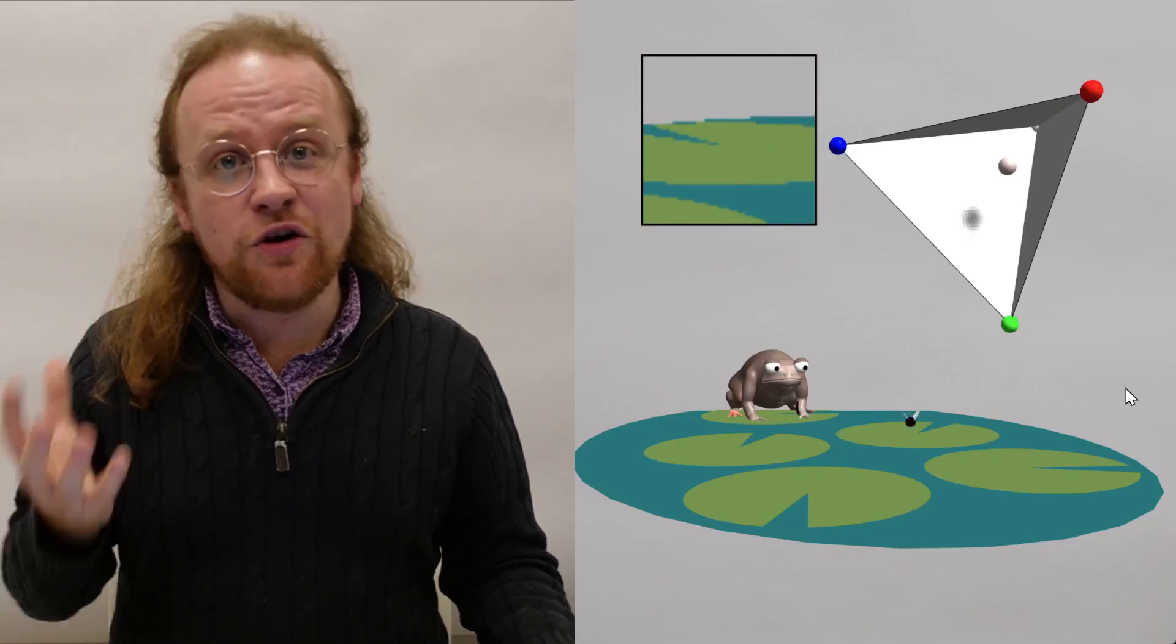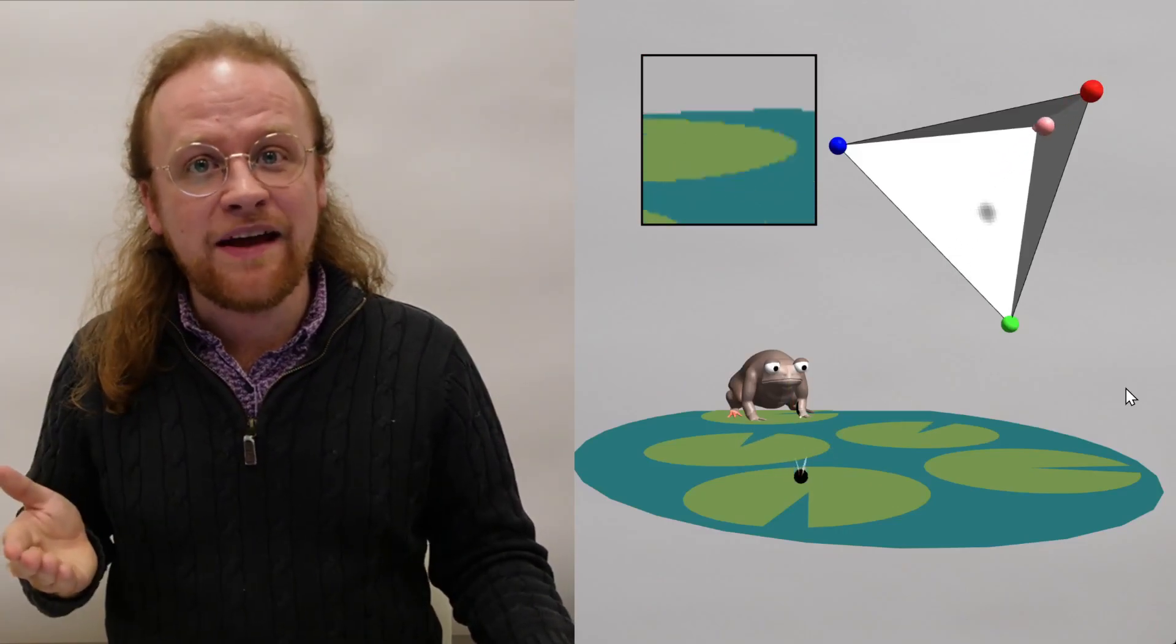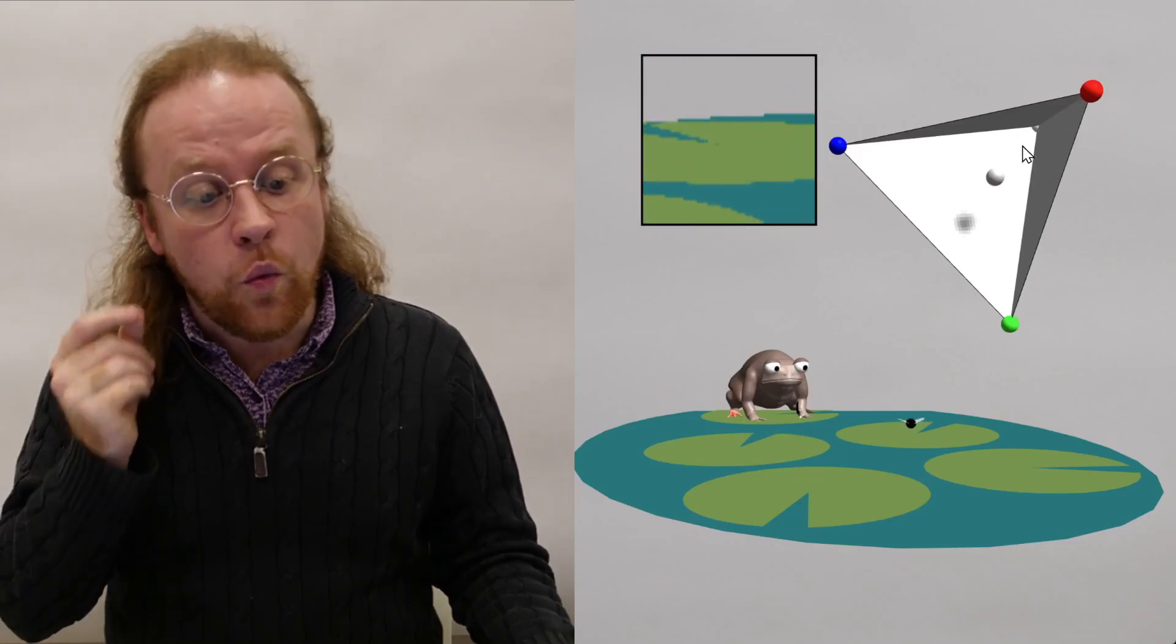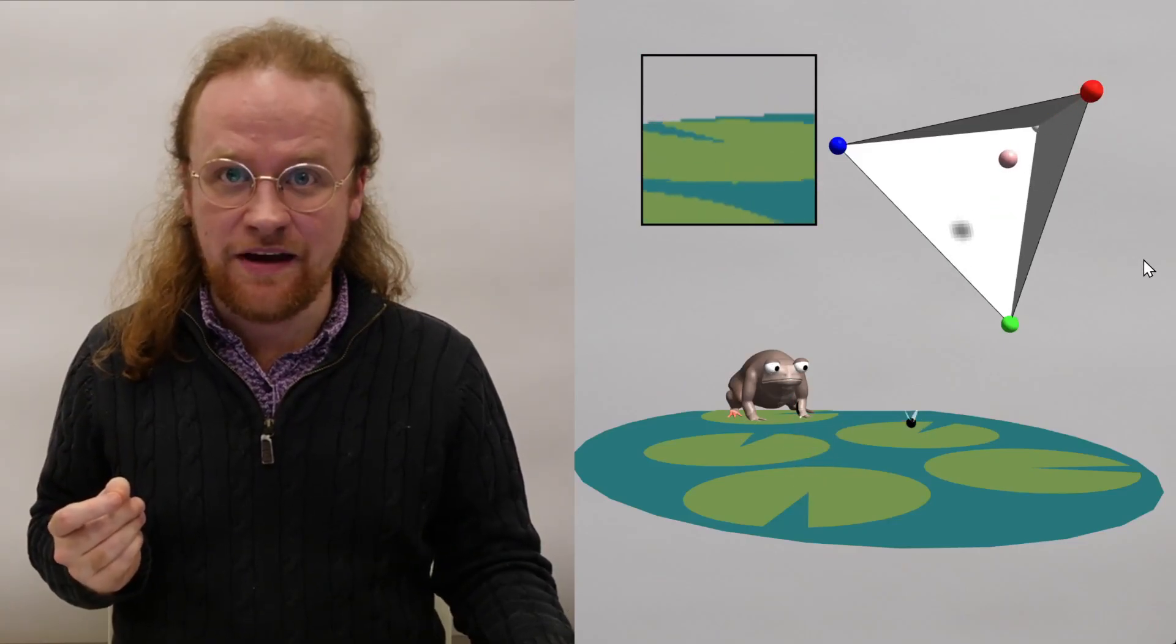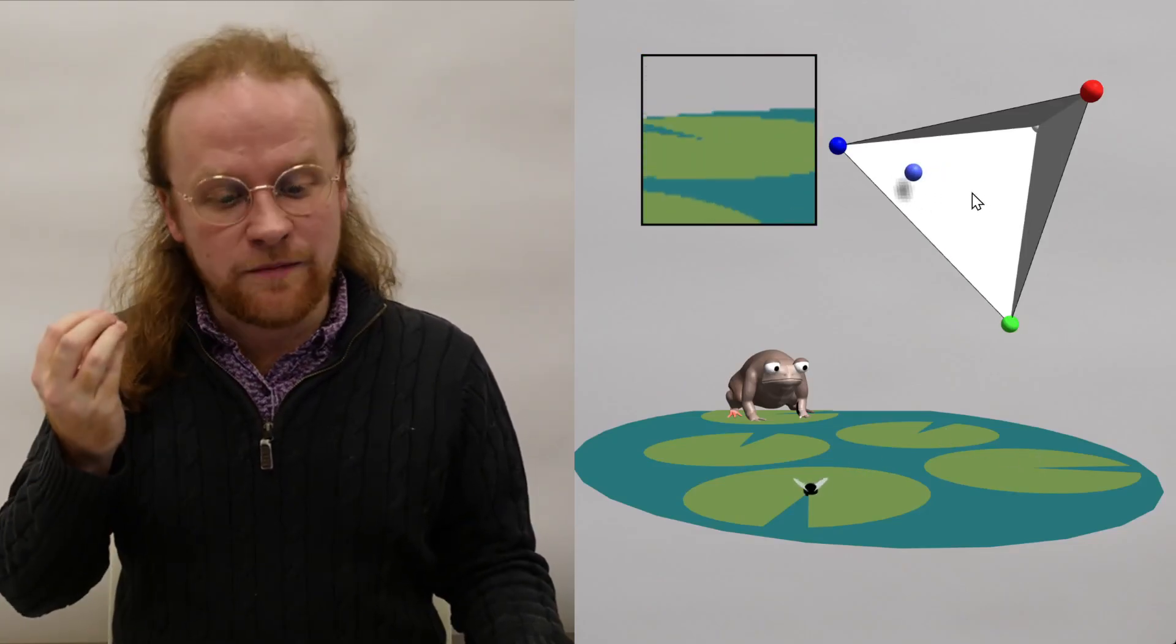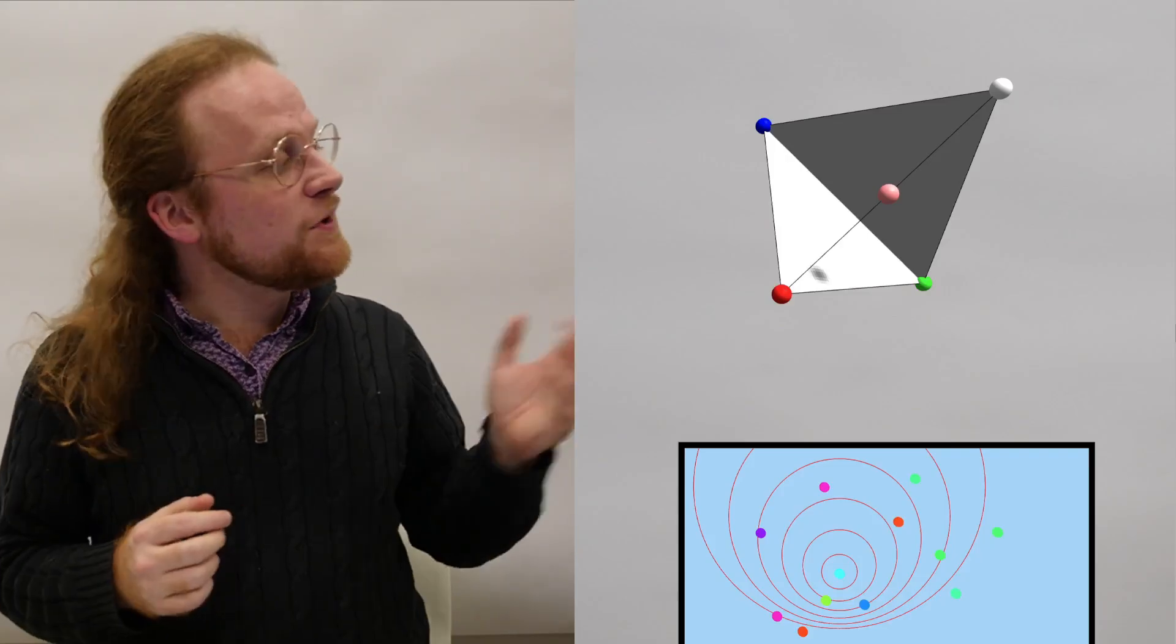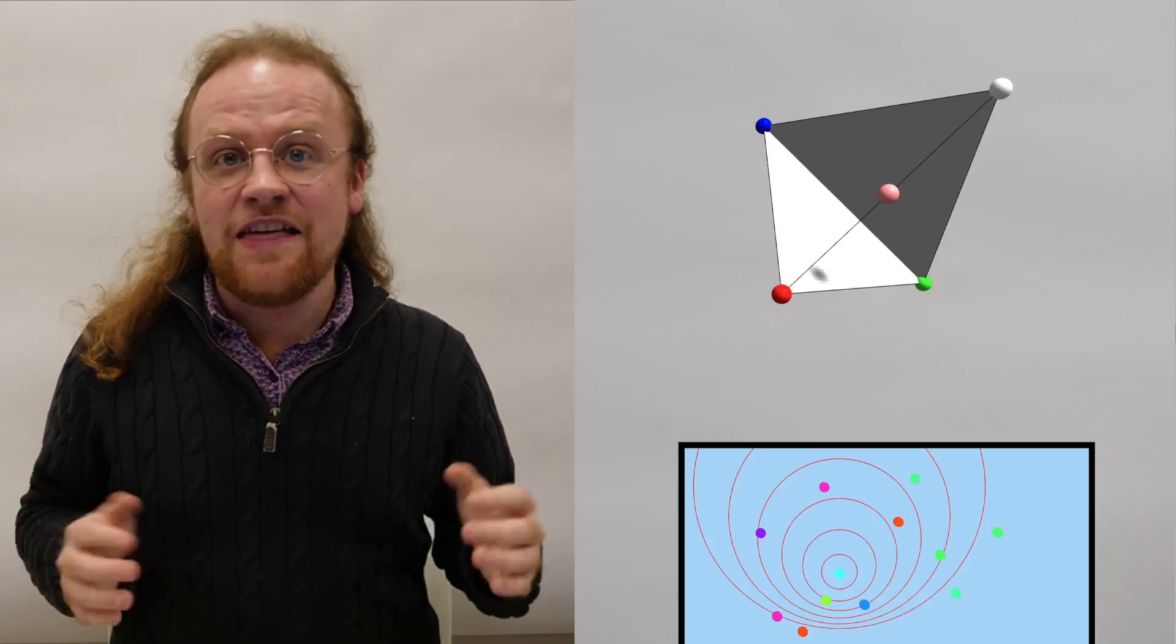As it looks from lily pad to lily pad, it sees whether the fly is there or not. If it's there, then it becomes certain and out goes the tongue. If it's not there, then the frog becomes more certain that the fly should be on one of the other lily pads, so its belief moves away from the point representing that lily pad. If the frog eliminates all but two of the lily pads, then the point representing its beliefs should be on the edge between those two.